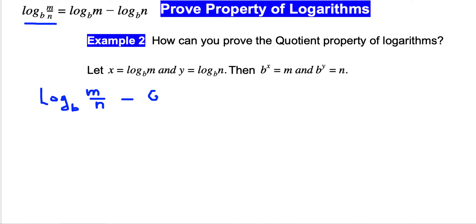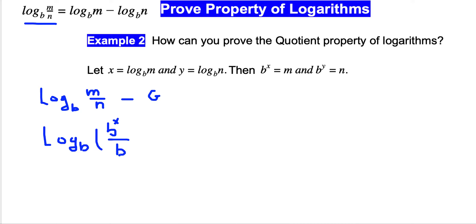Now I'm going to substitute m with b^x and n with b^y. So by substitution we have log base b of b^x over b^y. This is done by substitution.